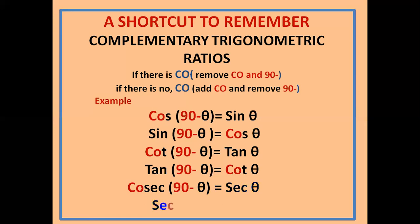The last one is csc(90 minus θ): there is no 'co', so add 'co' and remove '90 minus'. You get cos θ — sorry, you get sec θ.